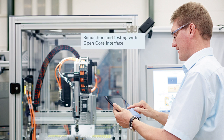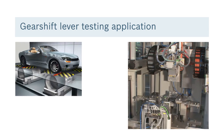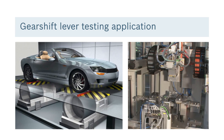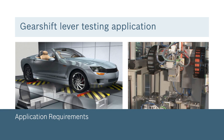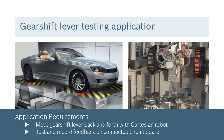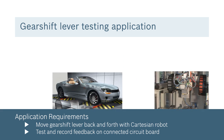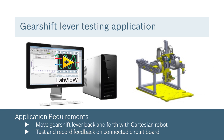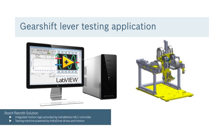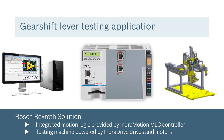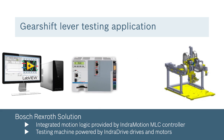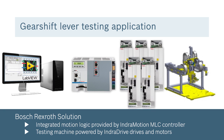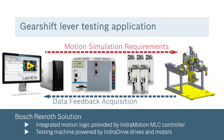In this example, the customer is using National Instruments measurement hardware in his application to test the circuit board on the back side of a gear shift lever. In the process, they need to move the gear shift lever back and forth as a human would use it in a car, then test the feedback on the connected circuit board. They already had all the measurement equipment designed in to do the circuit board testing, but needed a motion component. So they integrated a Rexroth L25 MLC controller with four or five axes of motion to control a Cartesian robot to simulate the movement of the gear shift lever.